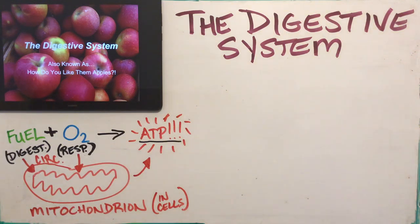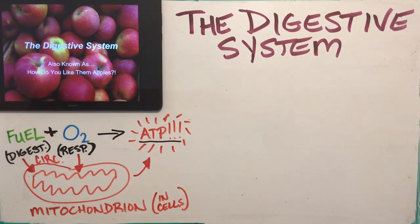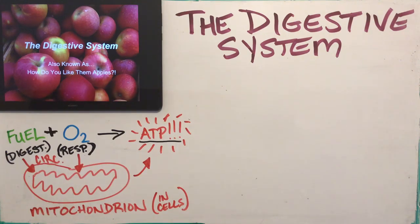All right, Biology 11. The next part of our internal systems unit is going to focus on the digestive system. There are going to be two YouTube lectures that are part of this — it's a fairly large system with lots of parts — so we'll do the first half today and the second half tomorrow.